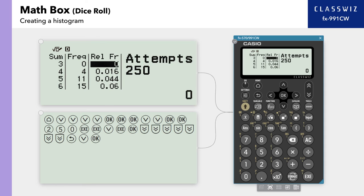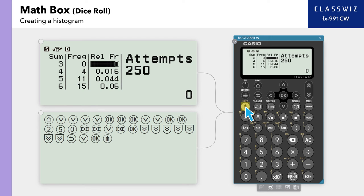You can use your smartphone or other device to see a histogram of the sums of these dice rolls. From this screen, press Shift, then X to create a QR code.